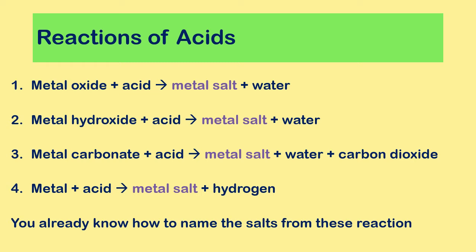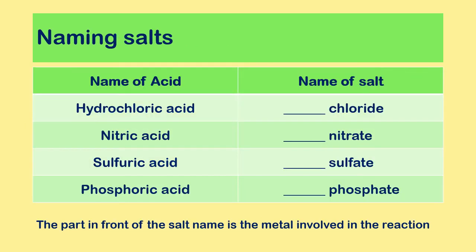In a previous lesson we learned how to name the salts from these reactions. Remember that hydrochloric acid forms metal chlorides, nitric acid forms metal nitrates, sulfuric acid forms metal sulfates, and phosphoric acid forms metal phosphates.